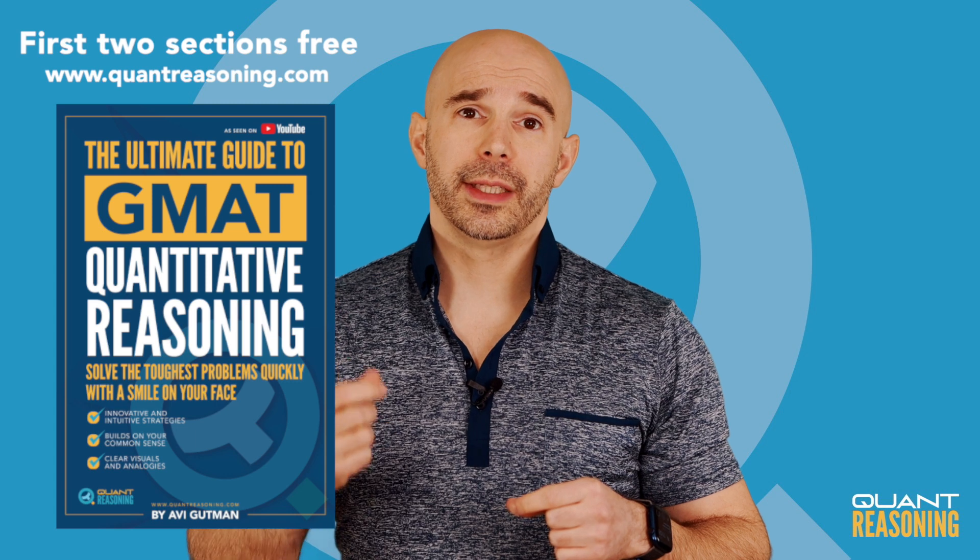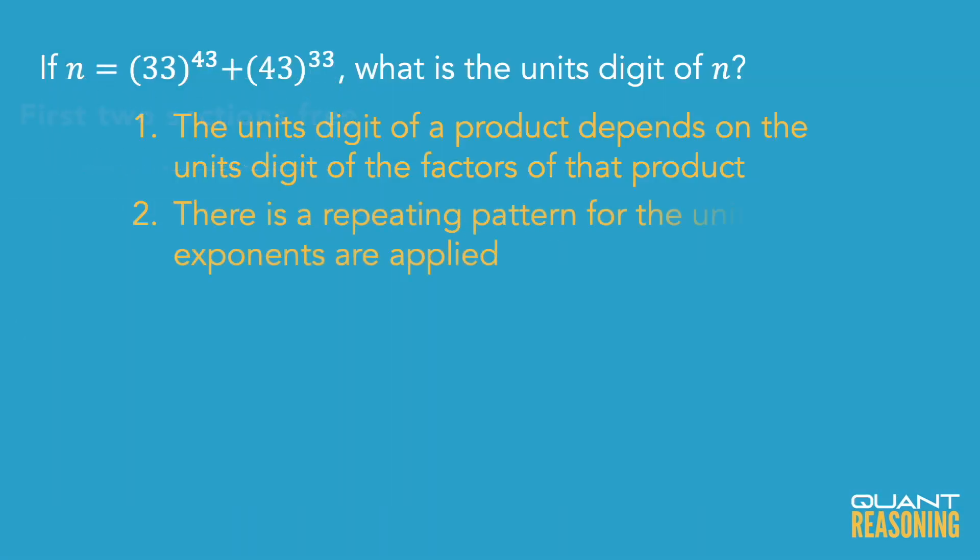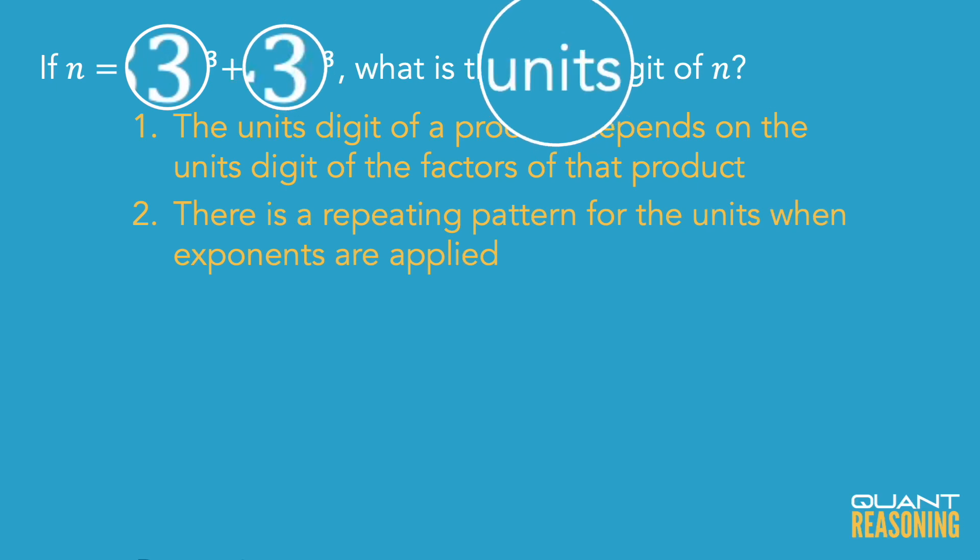The second thing we need to know is that there is a repeating pattern for units digits when we raise them to exponents. So I'm not looking at the bases as 33 and 43, I'm just looking at them as 3 and 3. Again, because the units digit is all that matters since the units digit is what they're asking about.